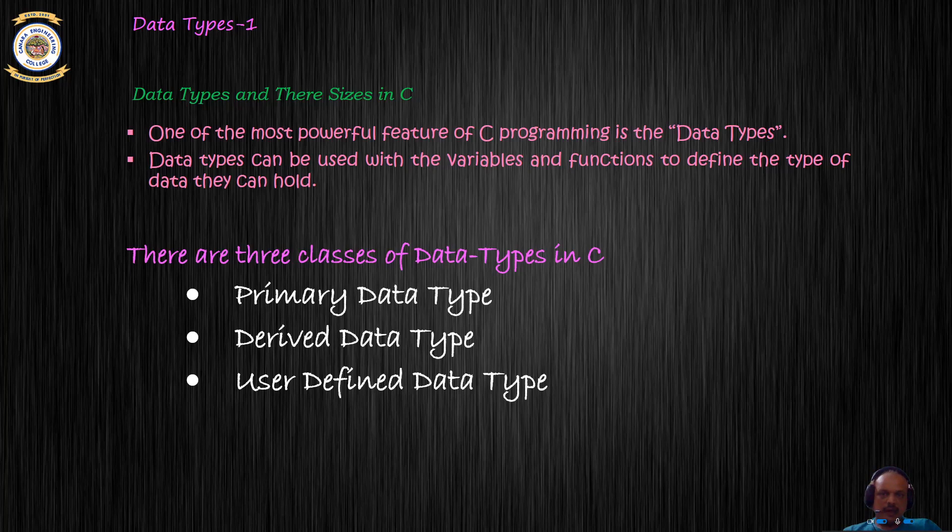C supports three types of data types: the primary data type, the derived data type, and the user-defined data type.